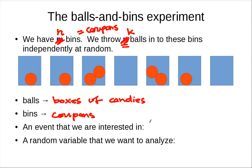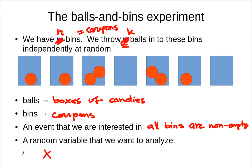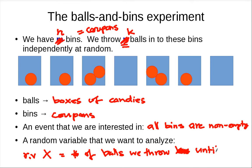The event we are interested in is that we get all the coupons, which is like all bins are non-empty. The random variable X is defined as the number of balls that we throw until all bins are non-empty. That's the correspondence between the coupon collector's problem and the balls and bins experiment.